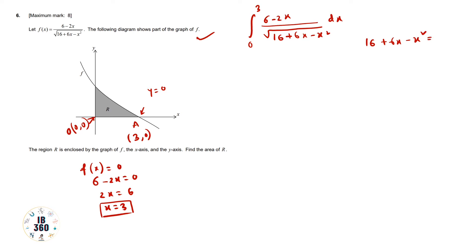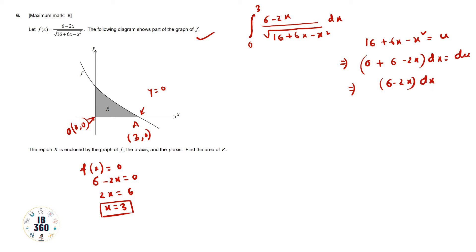We substitute u = 16 + 6x - x². Differentiating, the constant term gives 0, the x-term gives 6, and the x² term gives -2x, so (6 - 2x) dx = du.